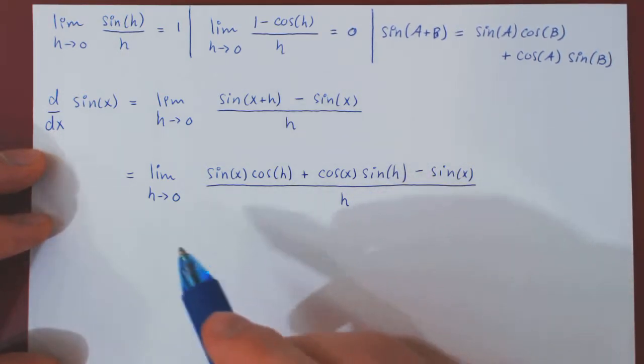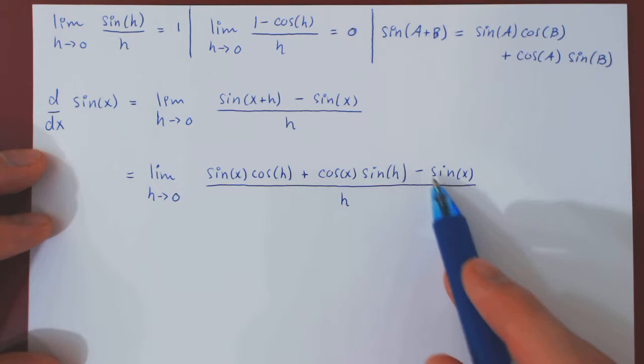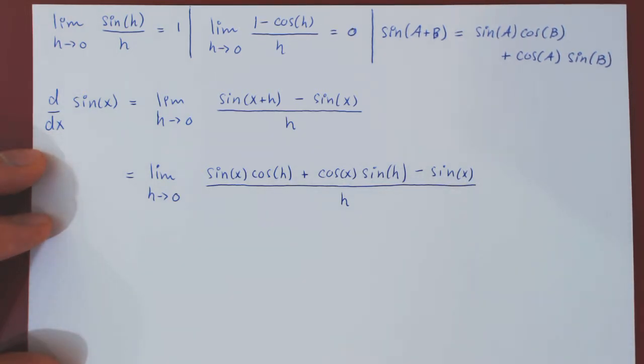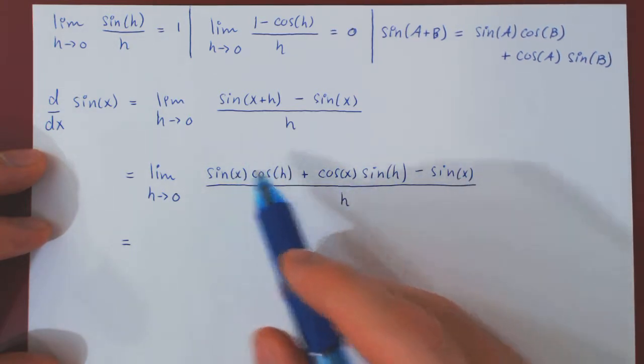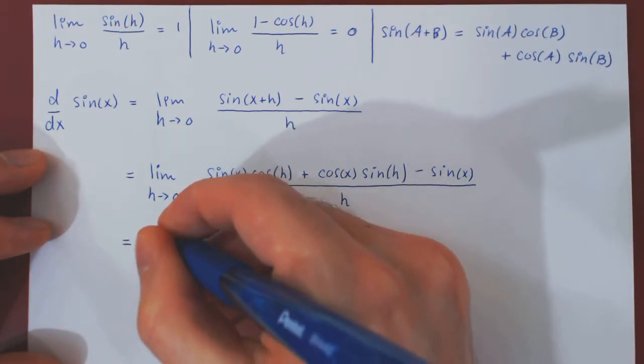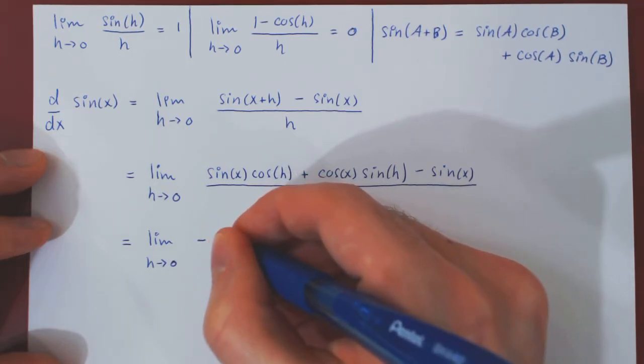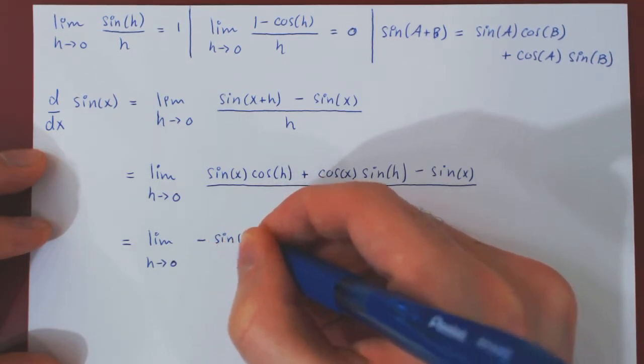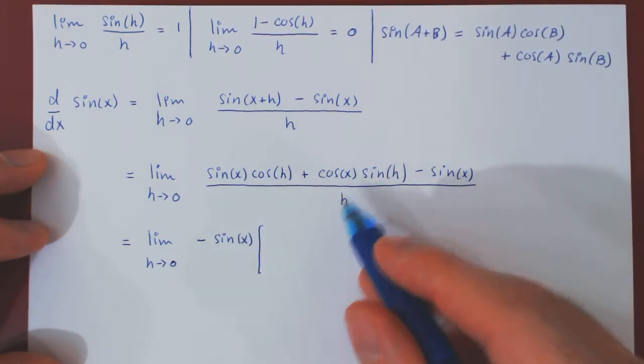The question is now what? Well, if you notice here, there are two terms that are multiples of sin of x, so we will pull them together and factor a sin of x. And to make it a little bit more obvious, I'll factor a negative sin of x from these two terms. So, from this term, let me rewrite the limit.